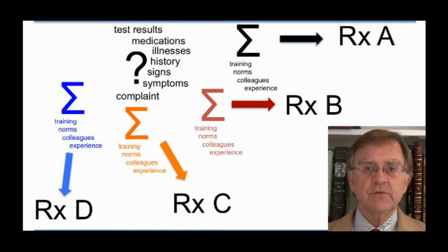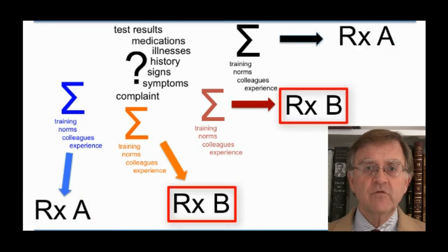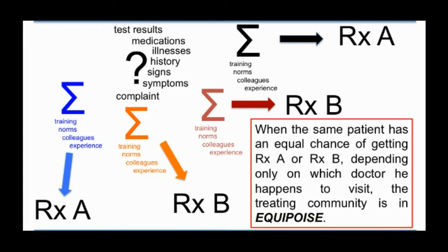Let's imagine for simplicity that all prescribers choose one of two treatments. If the same patient stands an equal chance of getting treatment A or treatment B, depending only on which doctor he happens to visit, the treating community is in equipoise. Our analysis screens population medical data for equipoise. We propose that where we find it, we've found a suitable place for doing comparative effectiveness research.